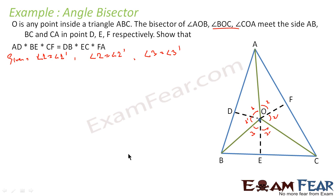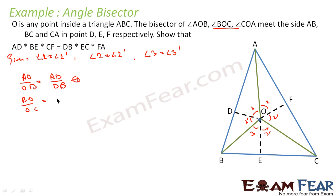How do we approach this problem? Since OD is the angle bisector of angle AOB, OE is the angle bisector of angle BOC, and OF is the angle bisector of angle AOC, we apply the angle bisector theorem to get three equations. From triangle AOB: AO by OB equals AD by DB. From triangle BOC: BO by OC equals BE by EC. From triangle AOC: OC by AO equals FC by AF.